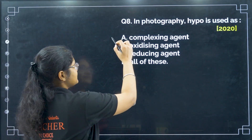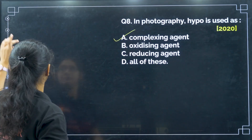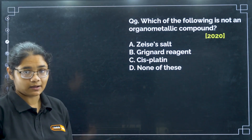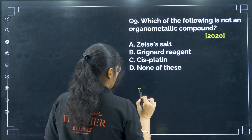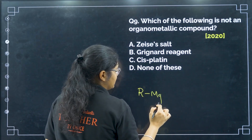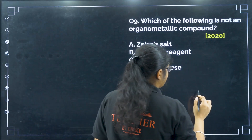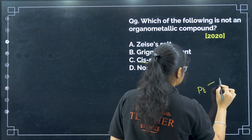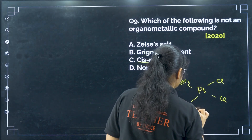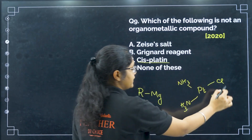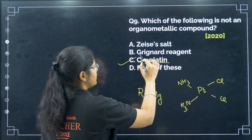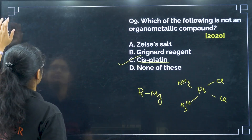Next, hypo is used as a complexing agent — option A. Next, which of the following is not an organometallic compound? In an organometallic compound, there must be a bond between a carbon and a metal. Looking at cisplatin, it has chlorine, chlorine, and ammonia — there is no carbon-metal bond. So cisplatin is not an organometallic compound — option C.